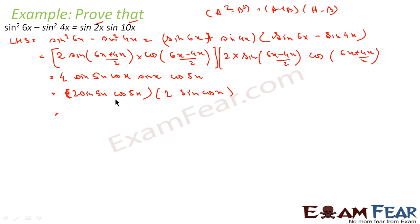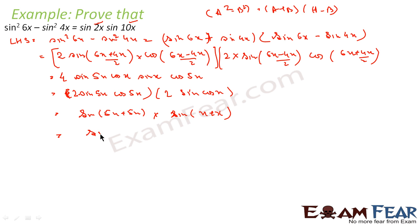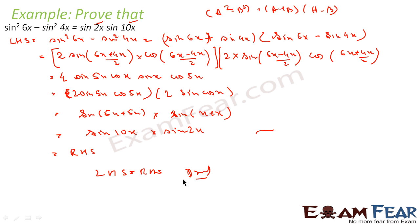We know that 2 sin 5x cos 5x is nothing but sin of 10x, that is sin of 5x plus 5x. And 2 sin x cos x is going to give sin of x plus x. So this is nothing but sin of 10x into sin of 2x, and that is what we were supposed to prove. LHS is equal to RHS. We have proved it.